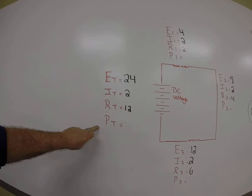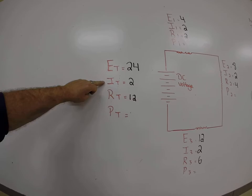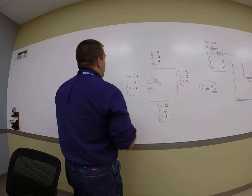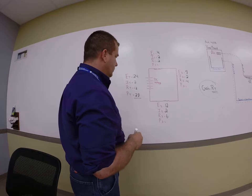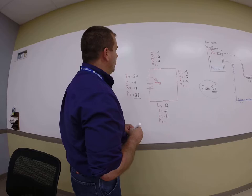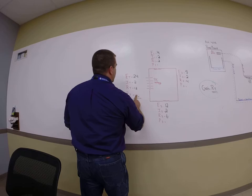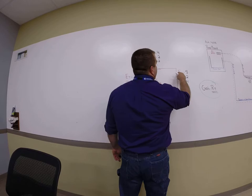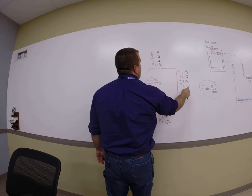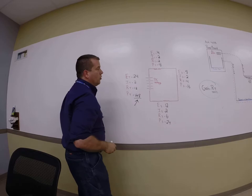The only thing left to find is power. I can use any two quantities to solve this. Typically when solving for power, we take voltage and current and multiply them together — I times E. 24 times 2 is 48. And because power is additive in a series circuit, these should result to 48. So I times E here is 24, I times E is 16, I times E is 8. If we take 16 plus 8, we get 24. 24 plus 24 does, in fact, equal 48.